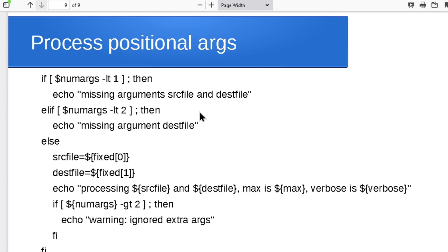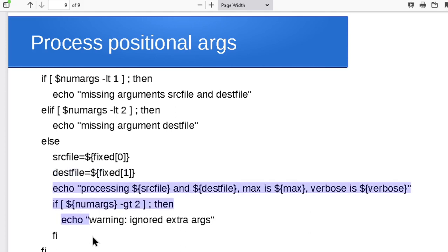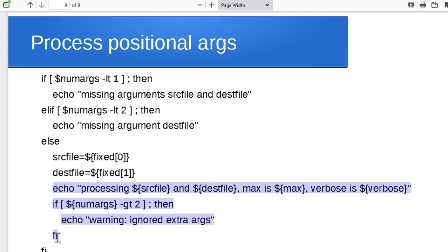Once we get to the end of our argument processing — once we're out of the while loop — we look at the number of file names we stored away. If it's none, we tell the user they didn't give a name for either file. If it's just one, we say they only gave one file name but we need two. Otherwise they've given us the right number of arguments, so our source file is the first one, our destination is the second, and we can go ahead and do whatever data processing the script is supposed to do.